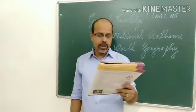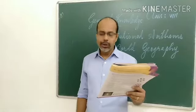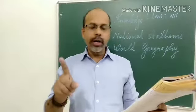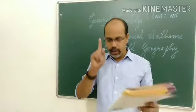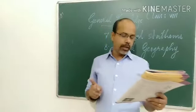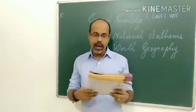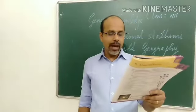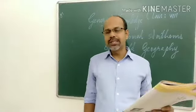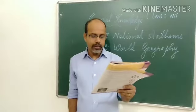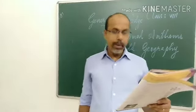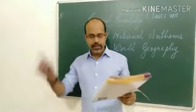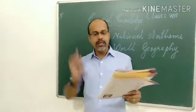Next question: the blank is the smallest continent in the world. Options: Asia, Australia, Africa. The smallest continent in the world is Australia, option B. But the largest continent is Asia. Eighth question: the blank is the largest desert in Asia. Options: Gobi, Thar, and Kalahari. Both Gobi and Thar are in Asia, but the Gobi Desert is the largest in Asia. The Kalahari Desert is in Africa.